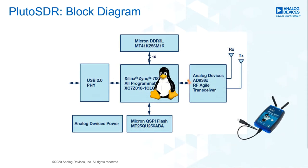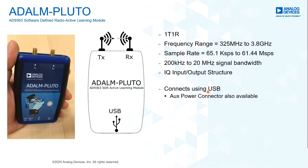The Pluto device is very simple: it has a Xilinx FPGA, the AD9363 transceiver, some memory, power supplies, and a USB 2 interface — that's it. Despite being simple and relatively inexpensive, the RF performance is good and meets datasheet-level specifications. It's a 1T1R design, roughly smartphone-sized, with a USB interface and the ability to be powered externally.